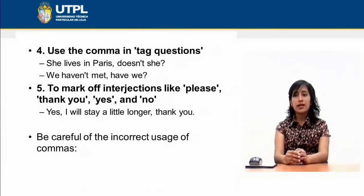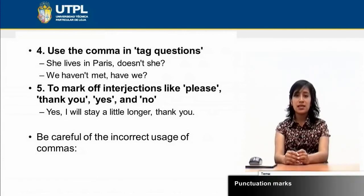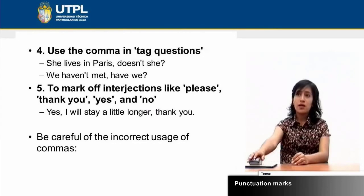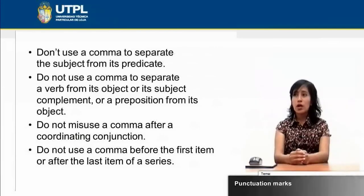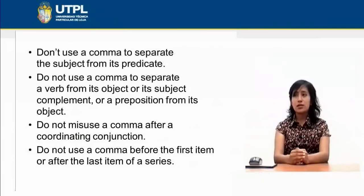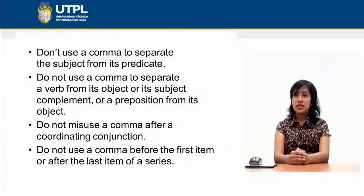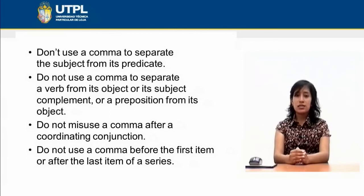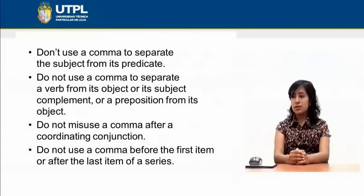We need to be careful when to use a comma because it's easy to make mistakes with these punctuation marks. Don't use a comma to separate the subject from its predicate. Don't use a comma to separate a verb from its object, its subject complement, or a preposition from its object. Don't misuse a comma after a coordinating conjunction, and don't use a comma before the first item or after the last item of a series.